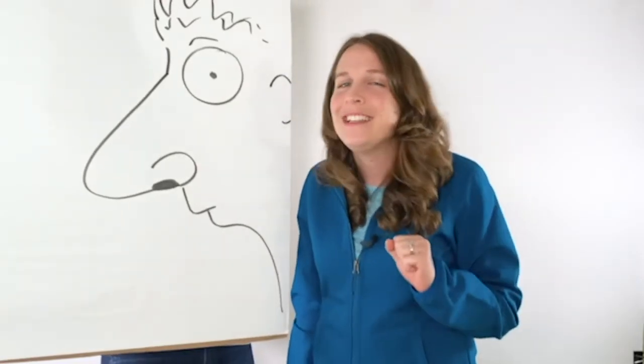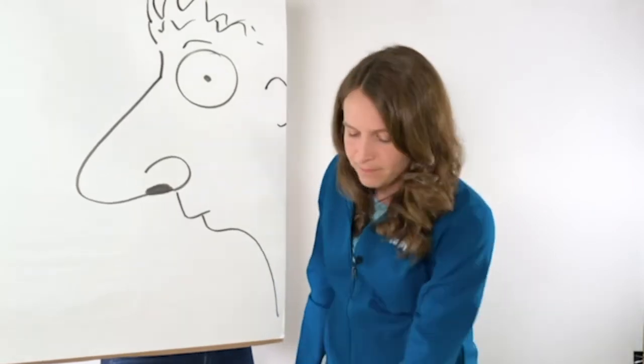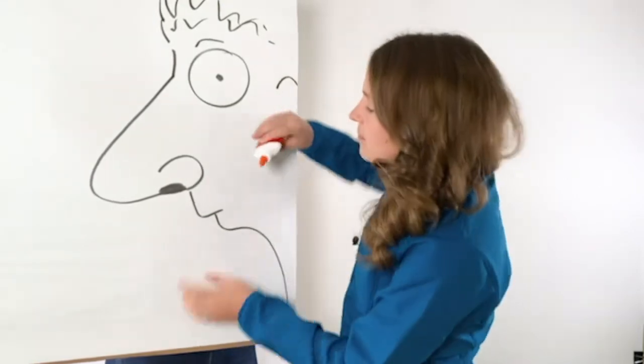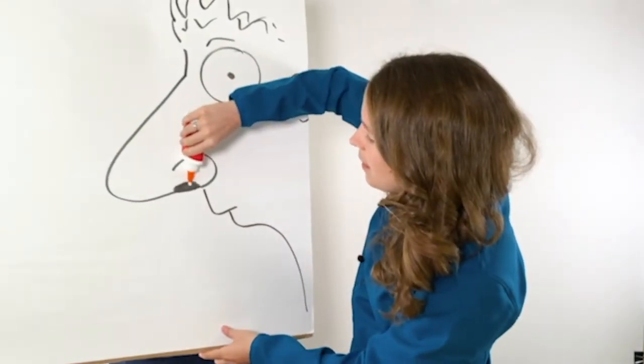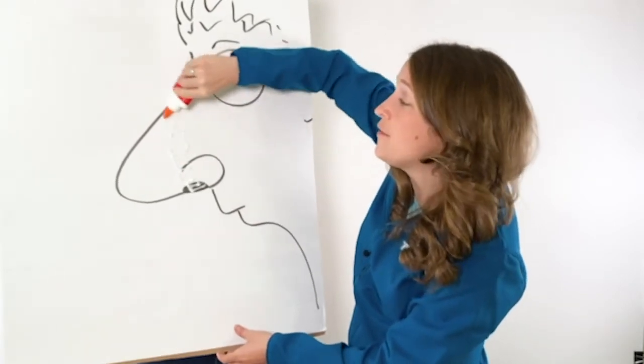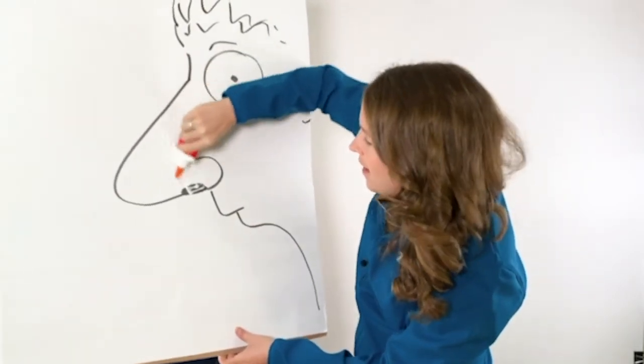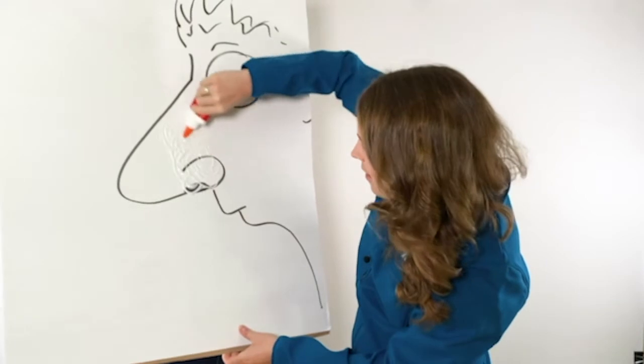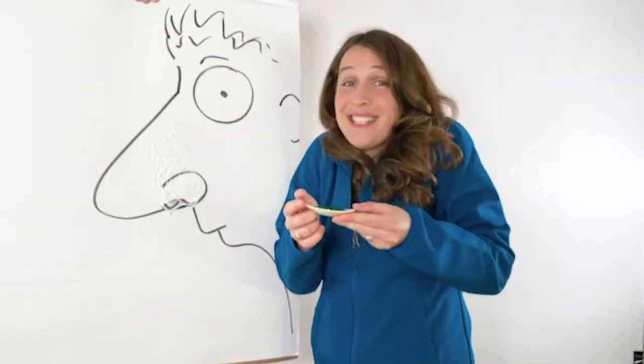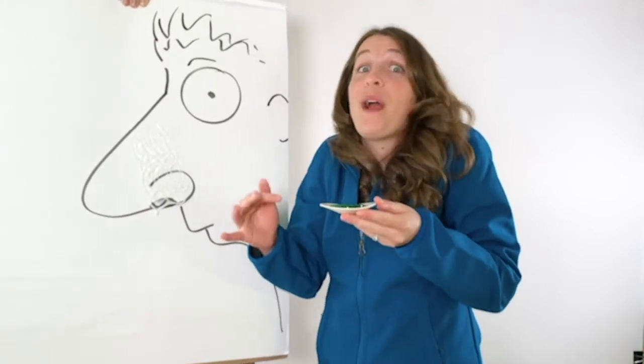Here, let me show you an example. Imagine this glue here is your mucus, and it's all up and down the inside of your nose. Now, this glitter is all the bad stuff, like bacteria floating around in the air.